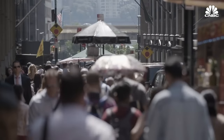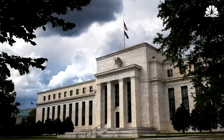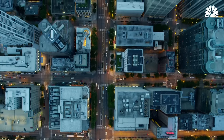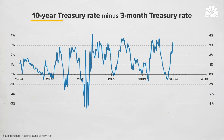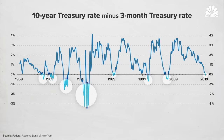The yield curve's predictive power has made it a crucial metric for investors and policymakers alike. The reason why we watch the yield curve so closely is that it has been an incredibly accurate predictor of recessions. Every time that yield curve has inverted, the economy eventually has gone into a recession. You can see that predictive power on this chart — it shows the difference between the long-term 10-year and short-term three-month treasury rates. When that line goes below zero, it represents an inversion, and those inversions have preceded every single U.S. recession going back 50 years.